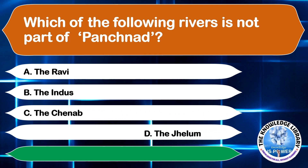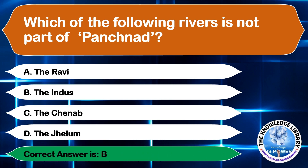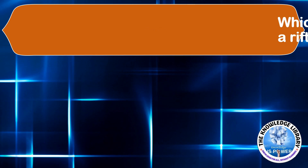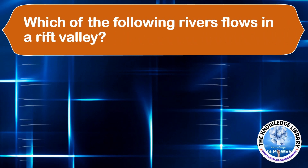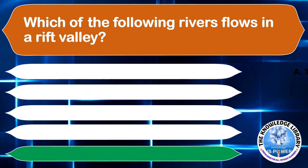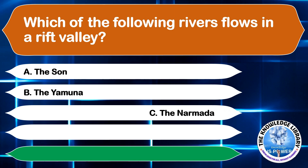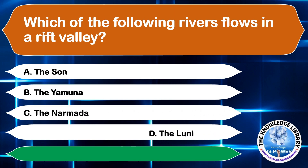Which of the following rivers flows in a rift valley? A. The Son, B. The Yamuna, C. The Narmada, or D. The Luni. The correct answer is option C, The Narmada.